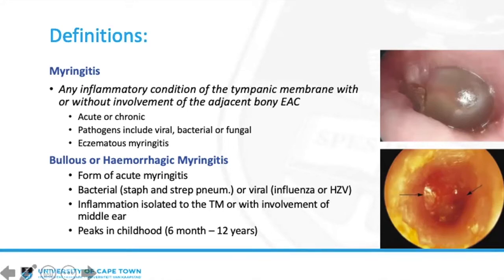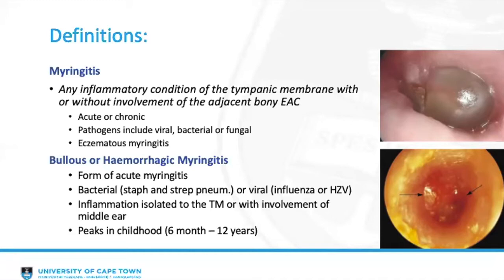Additional subtypes include granular and bullous myringitis. Bullous myringitis, also known as hemorrhagic myringitis, is a form of acute myringitis which may be caused by bacterial infection — typically Strep or Staph — or viral infections such as influenza or herpes zoster, and can be within the spectrum of Ramsay-Hunt syndrome. It can manifest as an isolated myringitis or together with middle ear infection as part of acute otitis media.